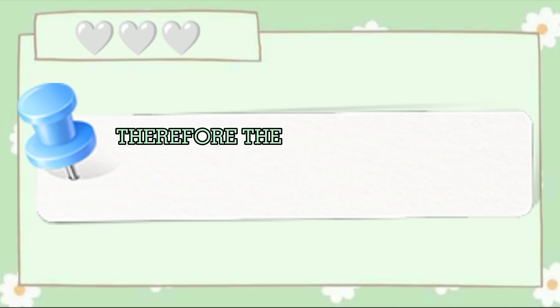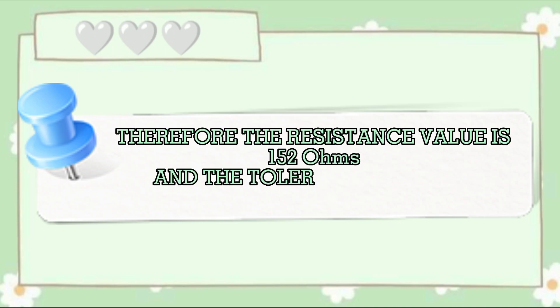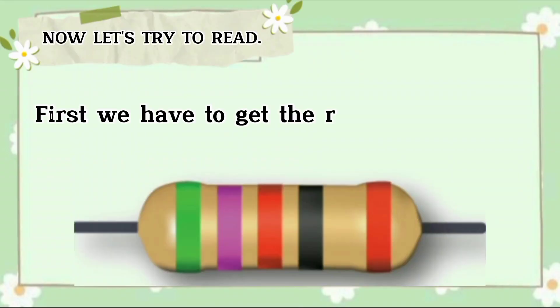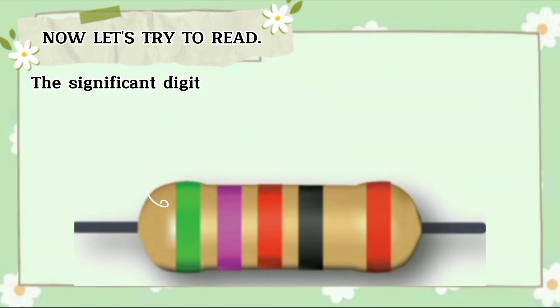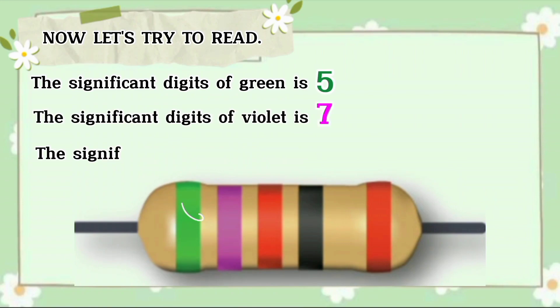Now let's try to read. First, we have to get the resistance value and the tolerance value. The significant digit of green is 5, the significant digit of violet is 7, and the significant digit of red is 2.